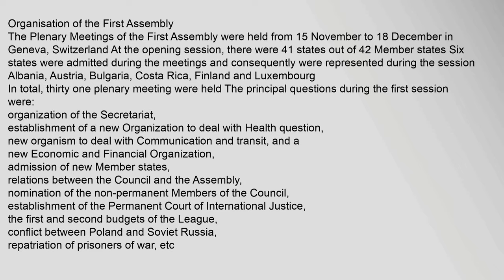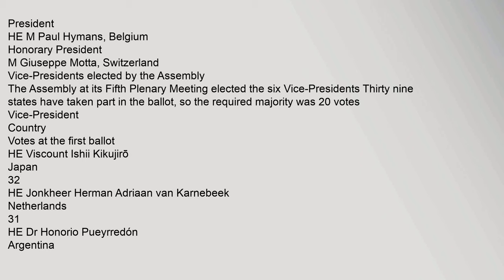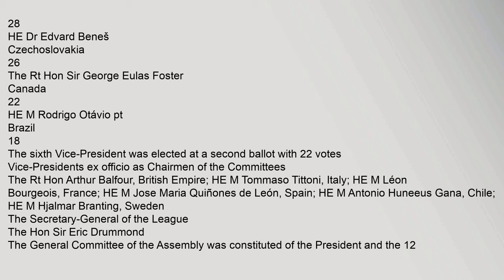President: M. Paul Hymans, Belgium. Honorary President: M. Giuseppe Mata, Switzerland. The Assembly at its fifth plenary meeting elected six Vice-Presidents; 39 states took part in the ballot, so the required majority was 20 votes. Vice-Presidents by country and votes at the first ballot: Viscount Ishii Kikajiro, Japan, 32 votes; Jonkheer Herman Adrian Van Carnabyke, Netherlands, 31; Dr. Honorio Pueriden, Argentina, 28; Dr. Edvard Benes, Czechoslovakia, 26; The Right Honourable Sir George Eulis Foster, Canada, 22.